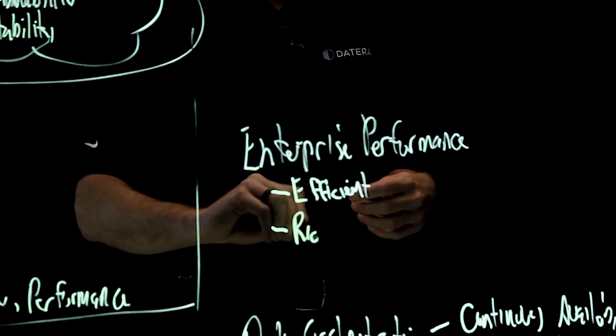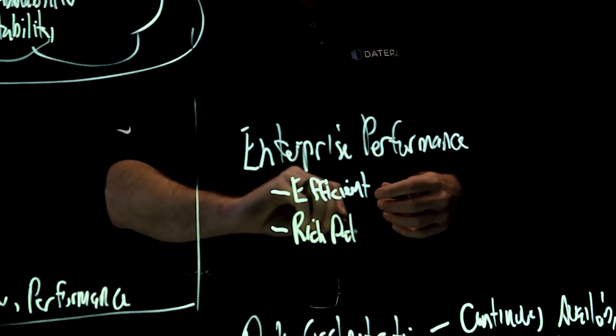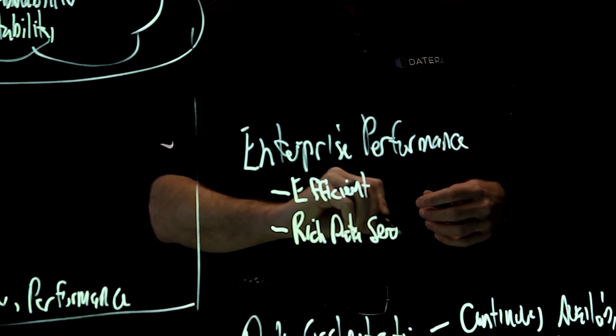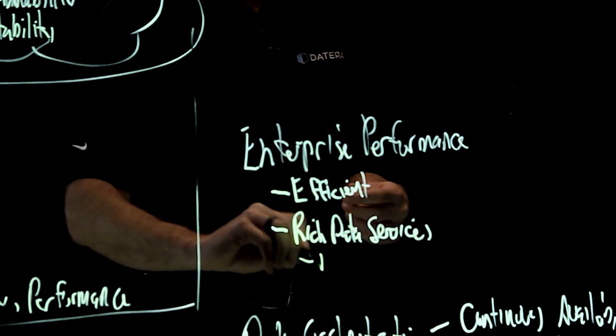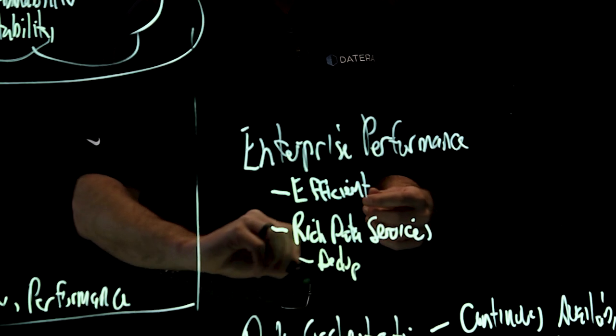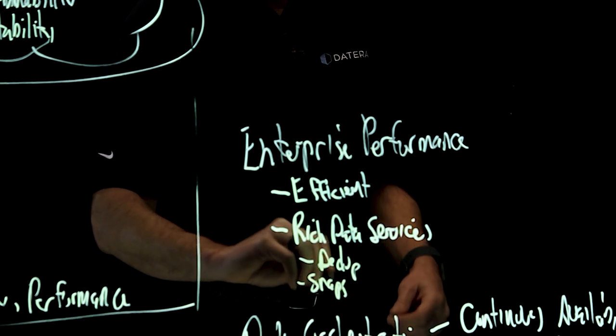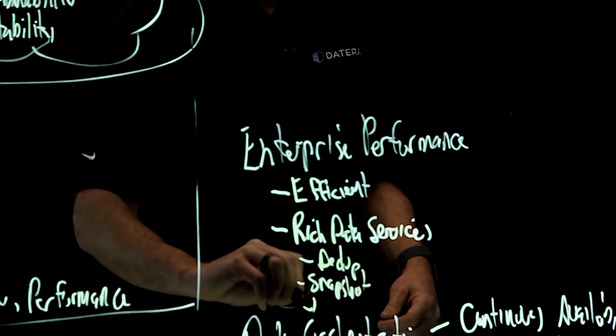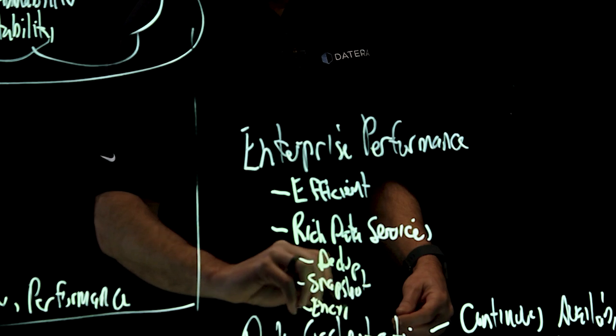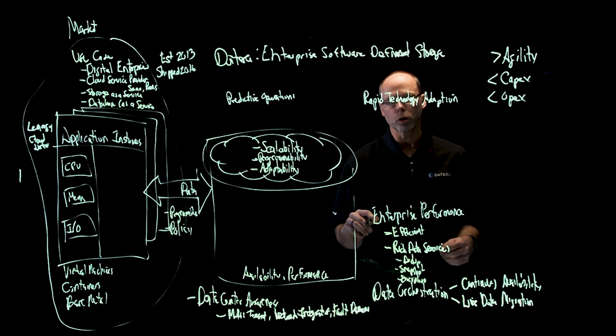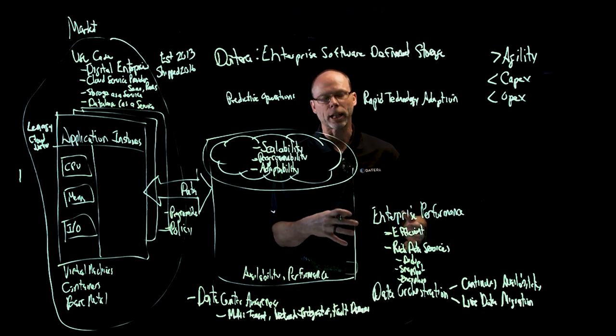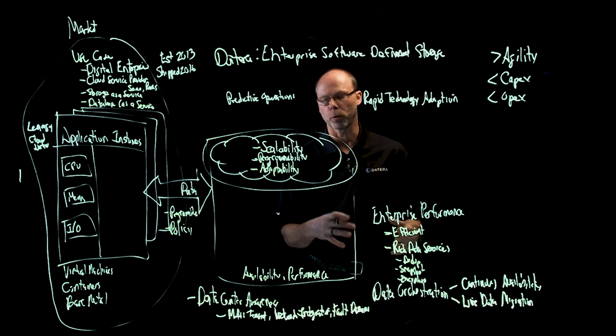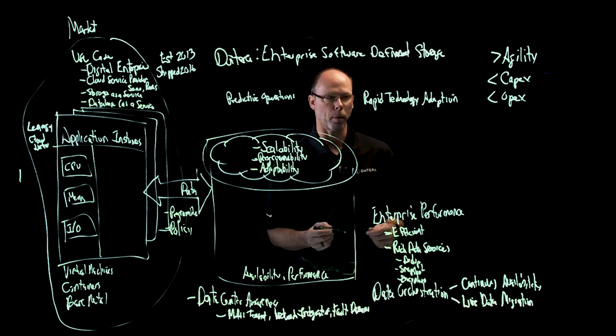The next is rich data services. You might ask why we put rich data services under enterprise performance. It's really a function of being able to deliver things like dedupe, snapshot, and encryption while delivering efficient performance. Most storage systems are designed and have a compromise where they can deliver rich data services, but they can't deliver those rich data services in conjunction with the performance necessary and specified by the policies.